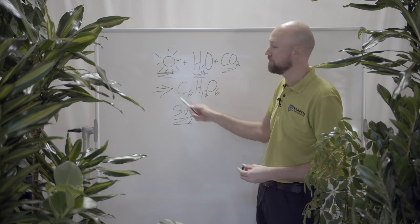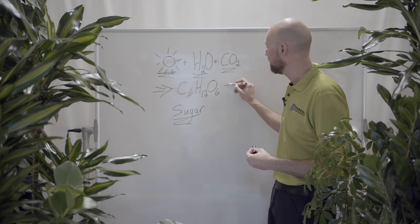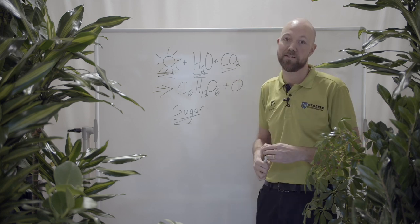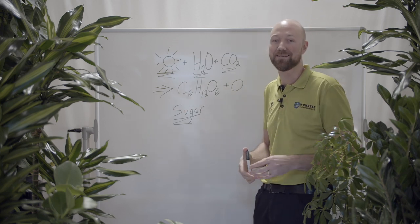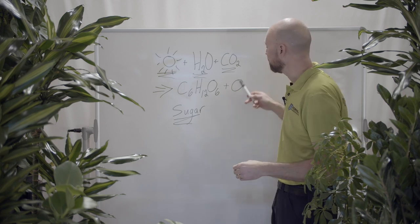Now we get something else here. The plant gets sugar from this process. But we also get something, because we get oxygen. Now this is not the complete chemical formula, so you don't have to write that down. This is just a simplified version of it. But we get oxygen.